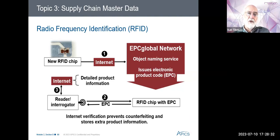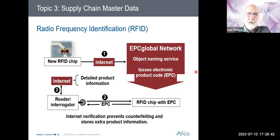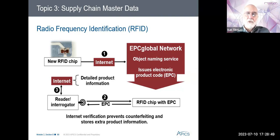After receiving the EPC code, the reader checks the internet to validate the tag and retrieves the detailed product data. We can also store a lot more data on an RFID tag. We do find RFID tags on some products we buy in shops, and if they don't neutralize them at the checkout, as you walk out of the store those detectors will beep and a security person will come and have a look at what you're trying to take out.